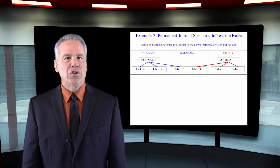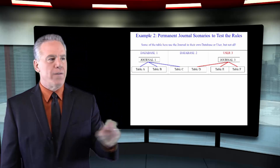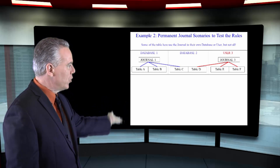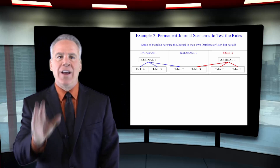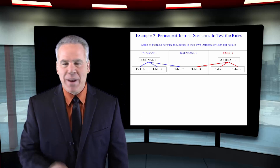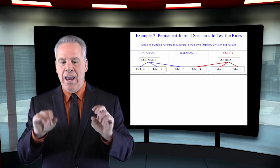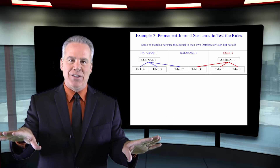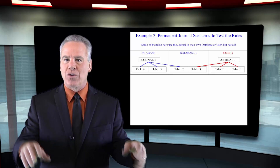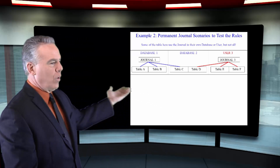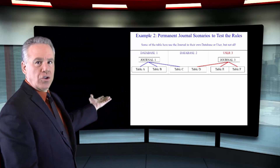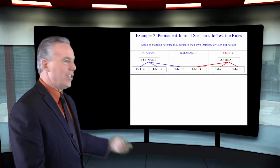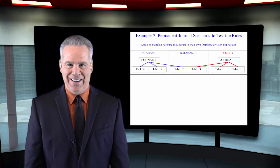This also follows the rules. In our first database, we have a journal and those tables are taken care of there. In the second database, there is no journal, and those tables have been assigned journals in other databases or users. And in user three, we have our journal there — it takes care of itself, plus tables from the other database.